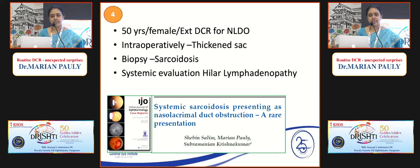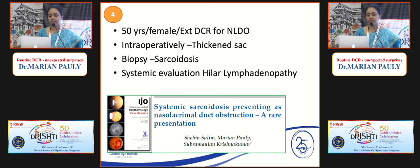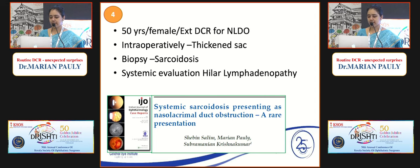In a 50-year-old female undergoing DCR for NLDO, the sac was found to be abnormally very much thickened intraoperatively. A biopsy was performed, which turned out to be sarcoidosis. On post-surgical history review, she had been taking treatment for chronic cough thinking it was asthma. She was eventually diagnosed with systemic sarcoidosis, and this has been published by Dr. Shrebin in IJO. The lesson: always biopsy an intraoperatively thickened sac. Another common condition is lymphoma.